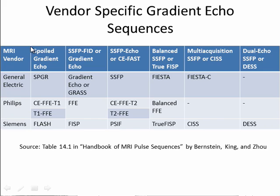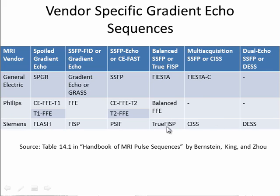I wanted to show a table of the different acronyms, just to give you a feel for how many different acronyms can be made just for gradient echo sequences — not only in themselves, but also between the vendors. Some people call it a zoo of pulse sequences. If you want to learn more about these other types of sequences, such as TRU FISP, the Handbook of MRI Pulse Sequences is a very good reference.